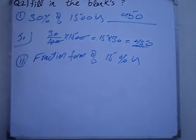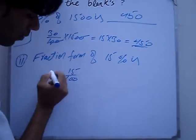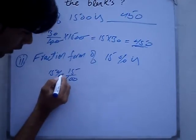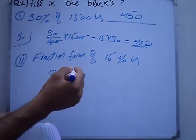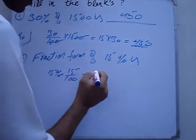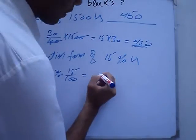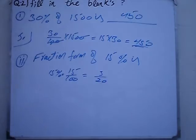15% equals 15 over 100, which simplifies to 3 over 20. So 3 over 20 is the answer.